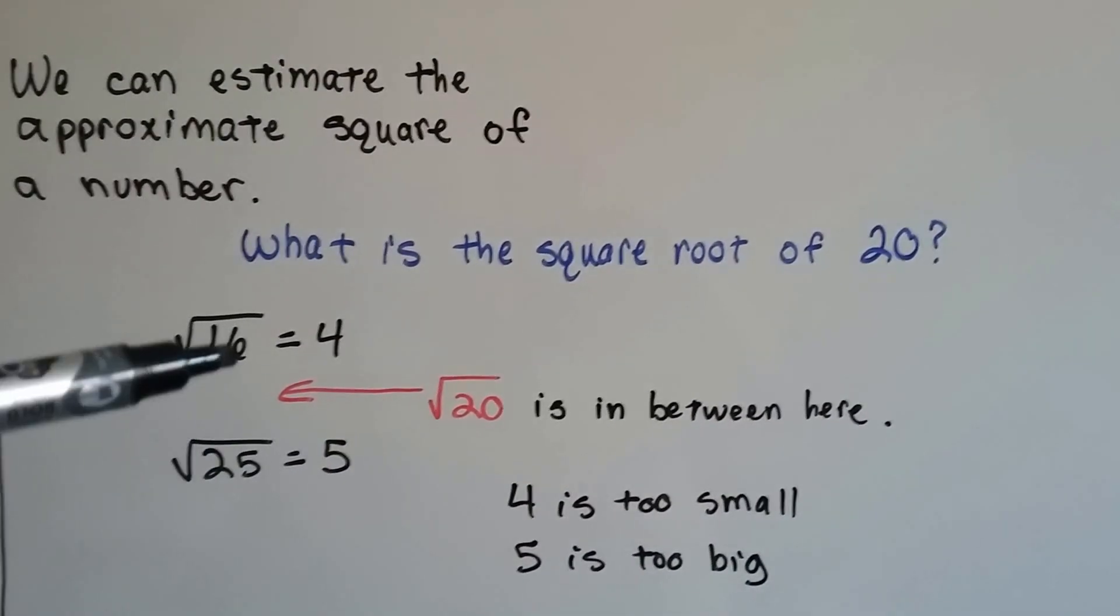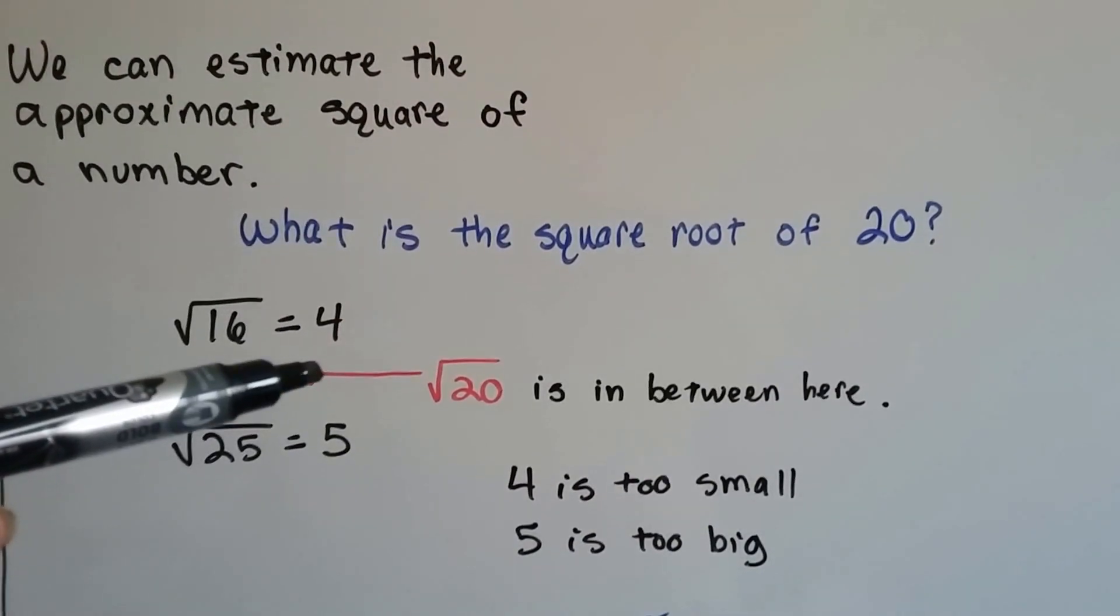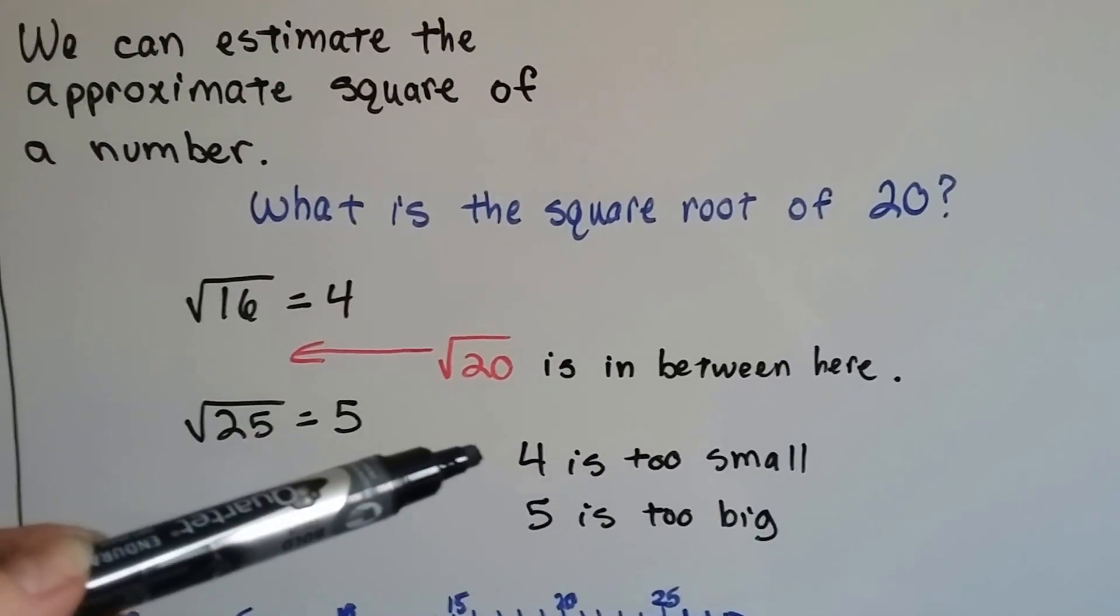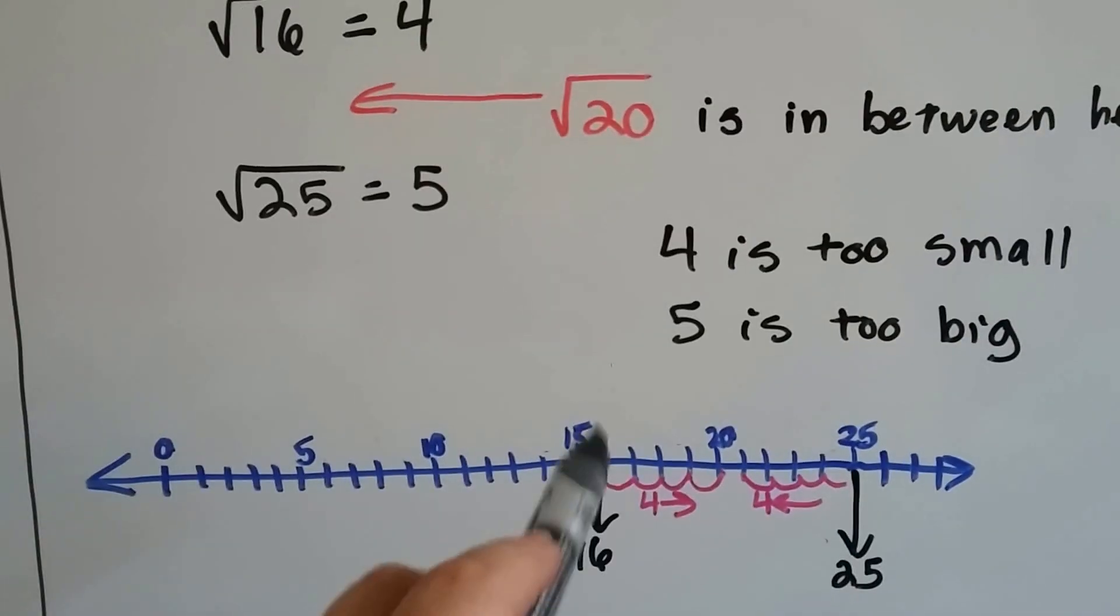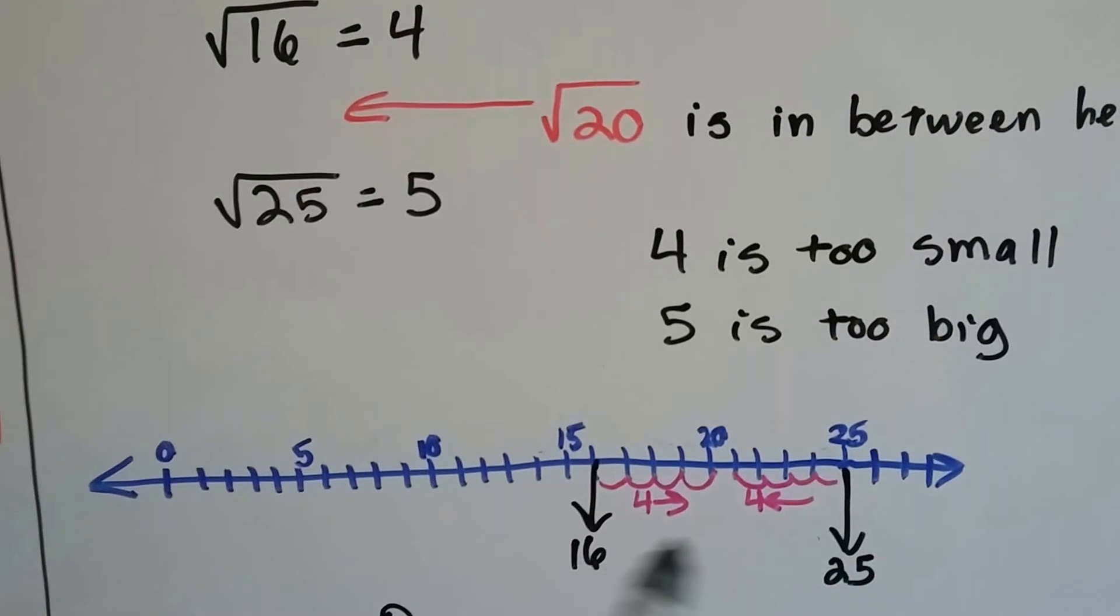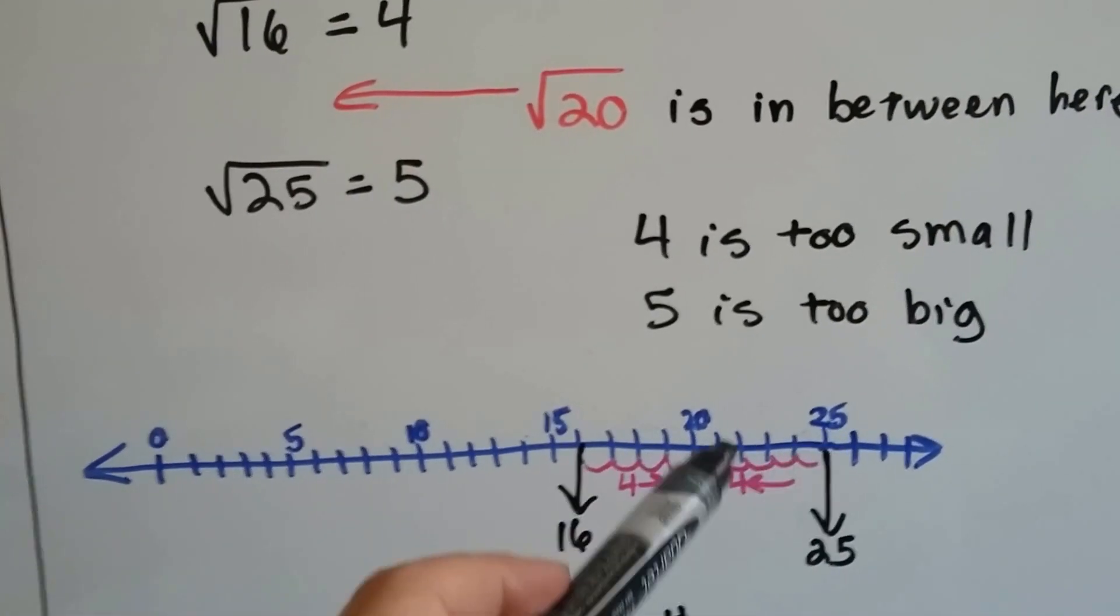And it's somewhere in between 16 and 25. But we've got a 4 and a 5 here. What's in between 4 and a 5? 4 is too small, 5 is too big. And we look at a number line. Here's 16 with the 4 and here's 25. And if I count 4 this way and 4 this way,